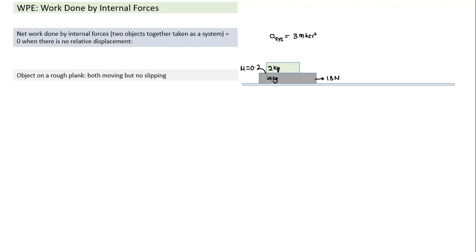With slipping, kinetic friction on the top block is μmg = 0.2 × 2 × 10 = 4 N forward. On the lower block, 4 N backward. Top block acceleration is 2 m/s²; lower block has net force 18 − 4 = 14 N, so acceleration = 14/4 = 3.5 m/s².